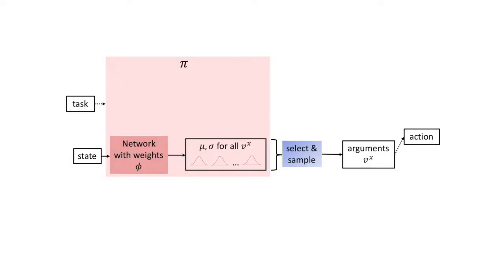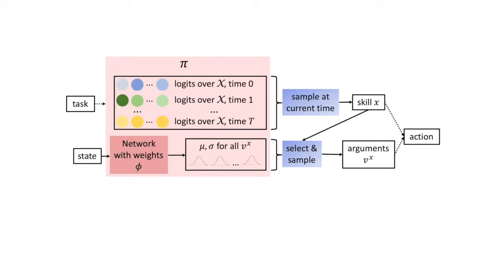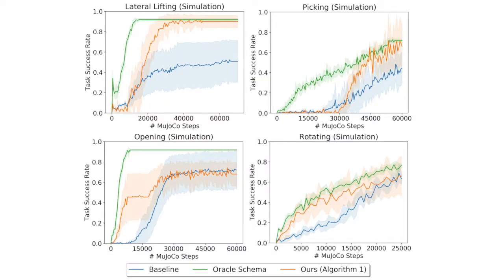Our approach is to have a state-conditioned neural network policy that only predicts a distribution over the continuous arguments, and to separately maintain a state-independent array of logits over which skill to use at each time step. We compare to a baseline that does not have this modularity. We find that this approach yields improvements in sample efficiency across bimanual manipulation tasks in simulation.